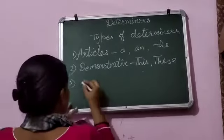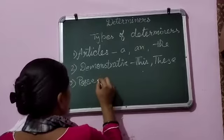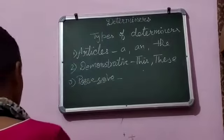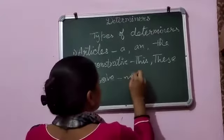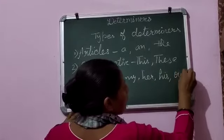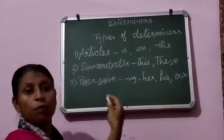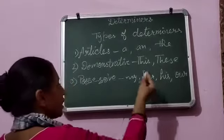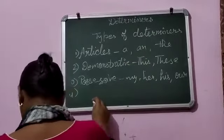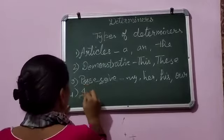Next आते हैं possessive determiners। Possessive determiners कौन से होते हैं? जैसे my, her, his, our, etc। जैसे हमने pronouns में किये थे, same वही चीज़ है। Pronouns वाले possessive pronouns को हम कह रहे थे, और इसमें possessive determiners कह रहे हैं।